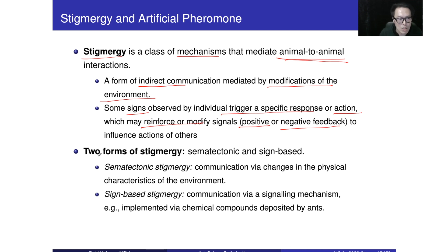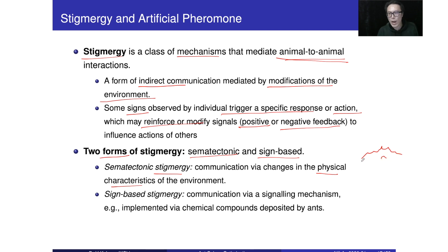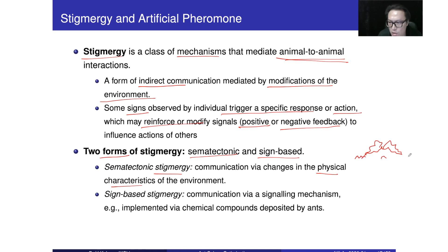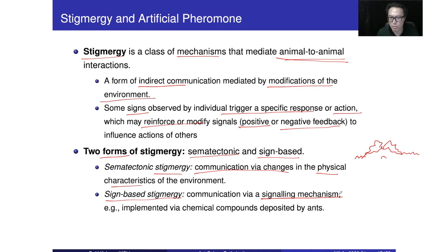We have two forms of stigmergy. The first is sematectonic stigmergy — communication through changes in the physical environment. For example, if we are building a nest, when an ant finds a change in the structure, it reacts correspondingly: if someone has built one part, this ant will move on to build another segment. The second form is sign-based stigmergy — communication via a signaling mechanism.